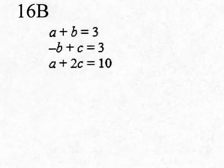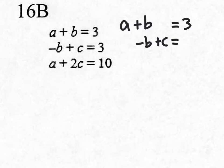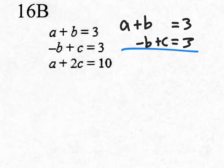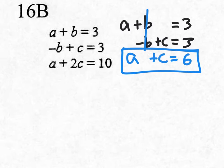Let's go with B's. I want to line it up nicely: A plus B, leaving space for my C value, equals 3. I combine it with the second equation: negative B plus C equals 3. Notice there's no A in the second equation, that's why there's a blank spot. Combining the lines: A stays, the B's cancel, and I get A plus C equals 3 plus 3, which is 6. This new equation only has A and C.